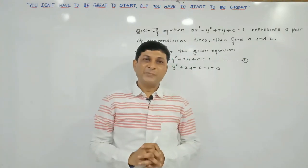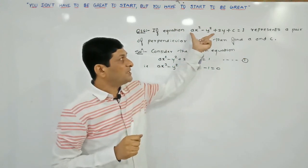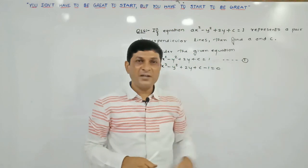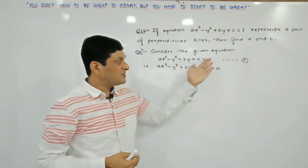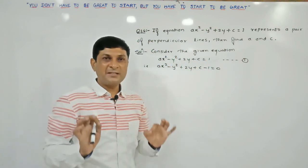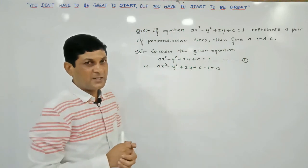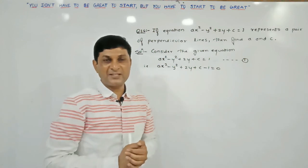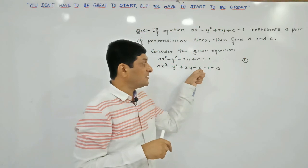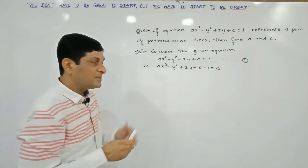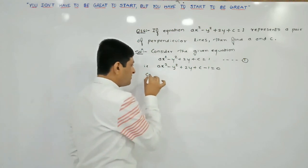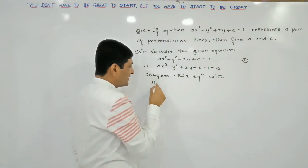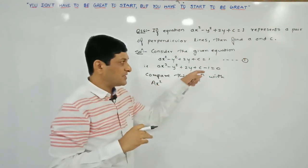Now see the last example from this miscellaneous exercise. A general equation of second degree in x and y is given which represents a pair of perpendicular lines; using this condition we have to find the values of a and c. We consider the given equation, bringing the constant to the left so plus 1 becomes minus 1. We compare this equation with the standard general equation Ax squared plus 2Hxy plus By squared plus 2Gx plus 2Fy plus C equals 0, using capital letters since small c is already used.